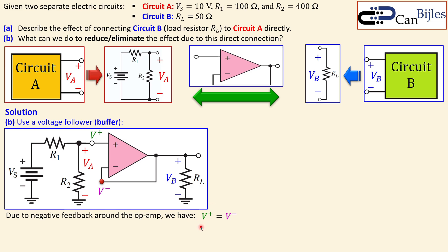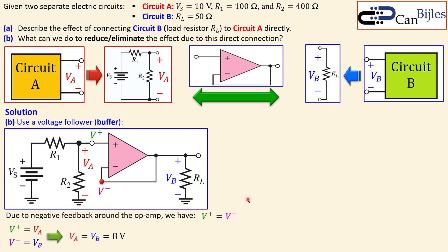We denote the non-inverting input as V+ and the inverting input as V−. Due to negative feedback, the op-amp tries to make these two node voltages exactly equal to each other — that is V+ equals V− in ideal situations. We know V+ equals VA and V− equals VB via the feedback wire. Therefore VA equals VB. That is exactly what we wanted — 8 volts — with no voltage drop at the load.